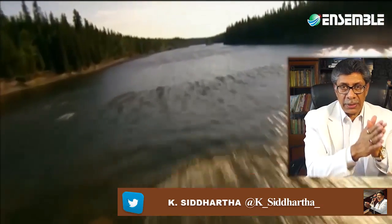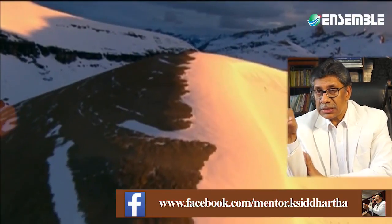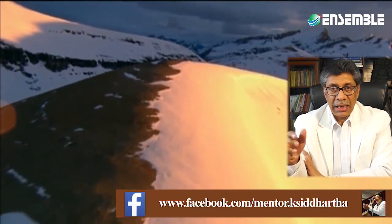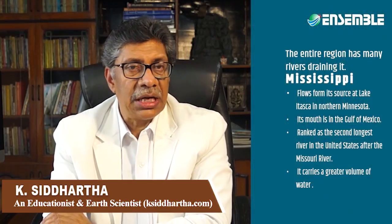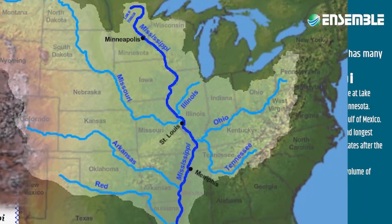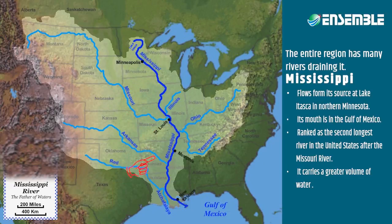As glaciers melted and receded, they left behind water bodies — ponds, streams, and lakes across the region. The entire plain has many rivers draining into it. One of them is the Mississippi, which flows from its source at Lake Itasca in northern Minnesota to its mouth in the Gulf of Mexico.